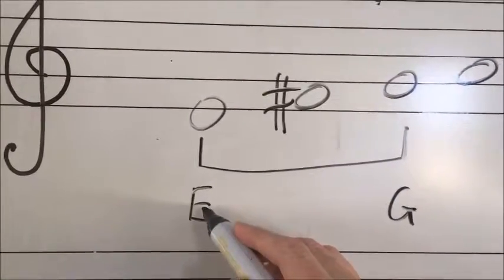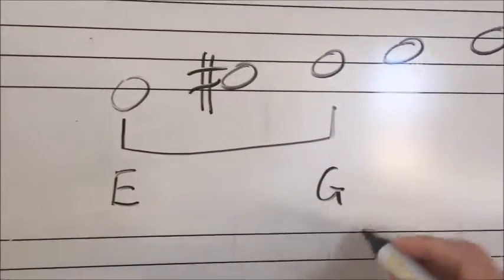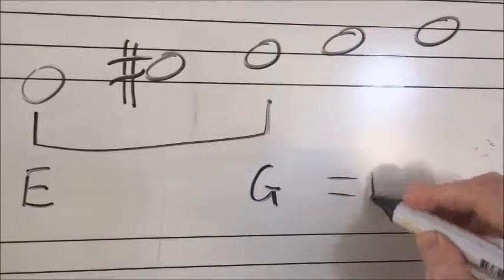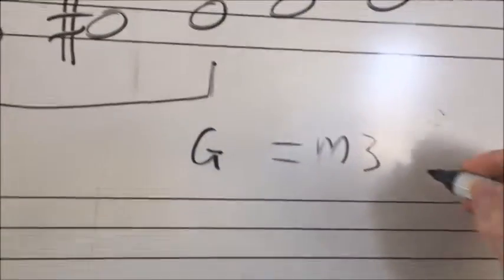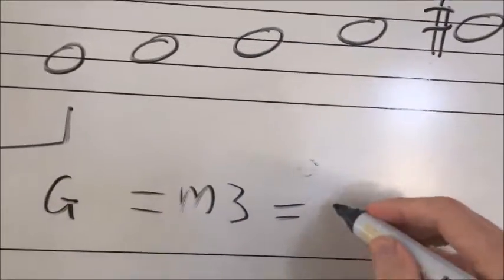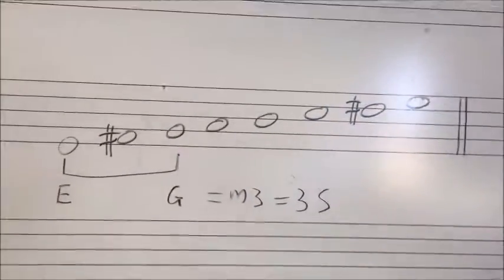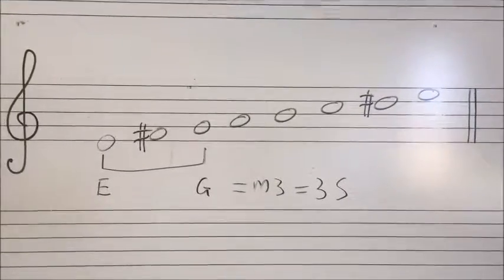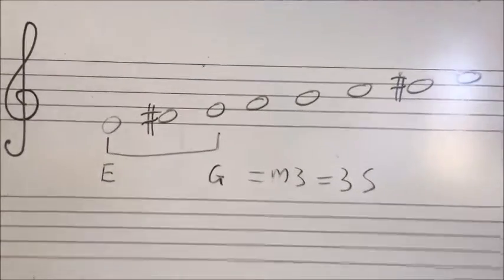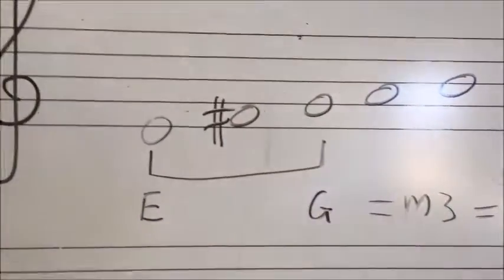The distance between an E and a G is a minor third, which is also three semitones. If you need help doing that, draw a piano and count from your tonic to your third note.